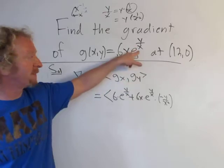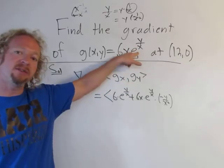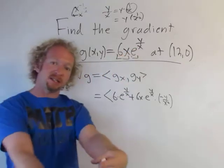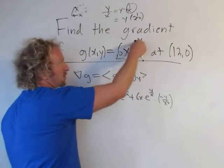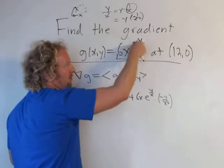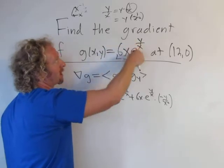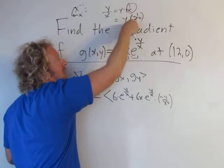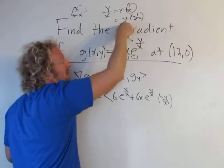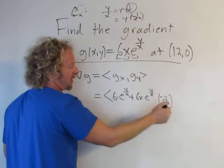So again: the derivative of the first is six times the second, plus the first times the derivative of this piece. The derivative of e to the x is e to the x, and then we use the chain rule, multiplying by the derivative of y over x — which we found to be negative one over x squared.